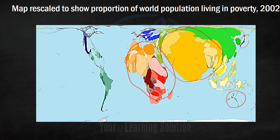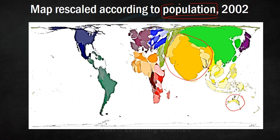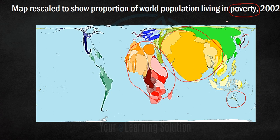We see that Australia, Japan, and North America are very thin or small here because they have a very small proportion of their population living in poverty, whereas a large area is occupied by Africa and India and also somewhat by China.